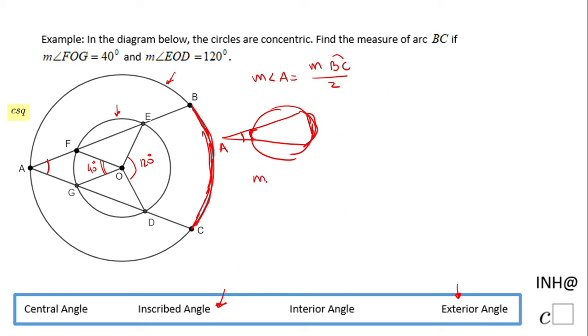So in our case, the measure of angle A will be half the difference of the measure of arc ED, this one, minus the measure of arc FG.